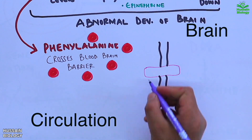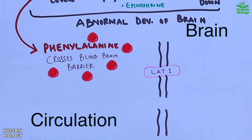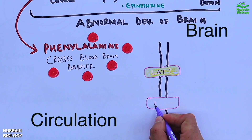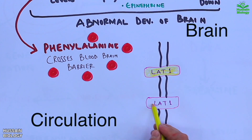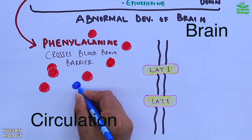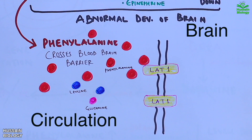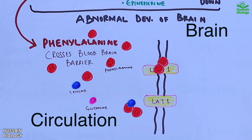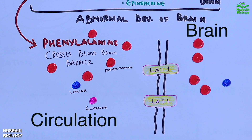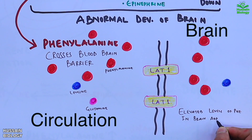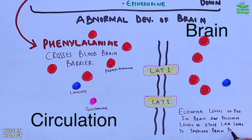The elevated levels of phenylalanine in blood can cross the blood-brain barrier since phenylalanine is able to utilize the L-type amino acid transporter LAT1, which other amino acids such as leucine and glutamine also use. When phenylalanine levels are elevated, it competes with other amino acids to cross the blood-brain barrier, resulting in increased phenylalanine in the brain, which eventually damages it.